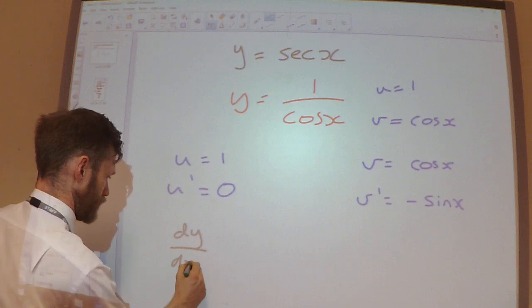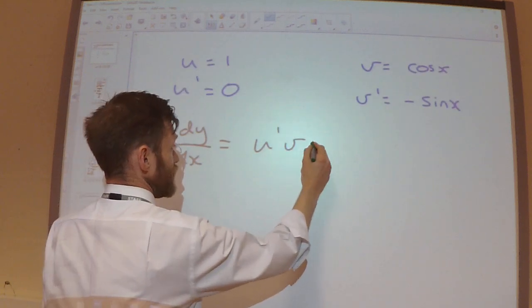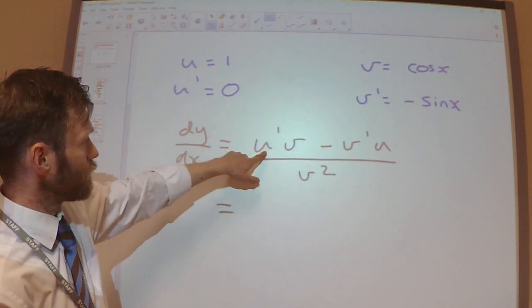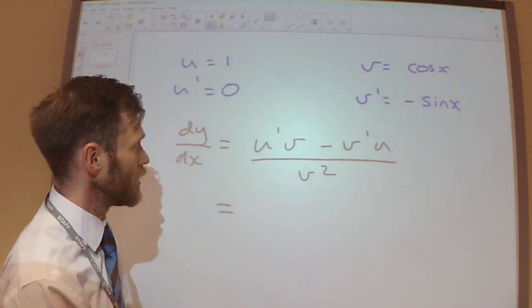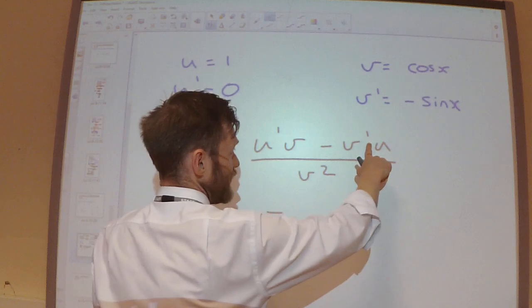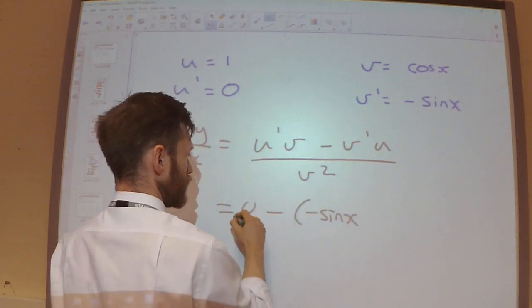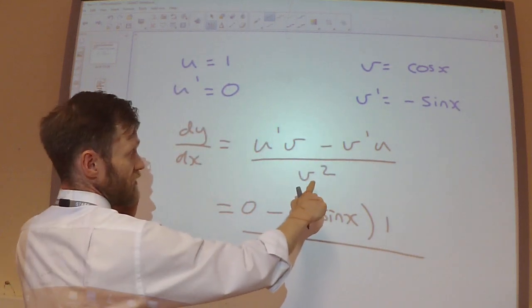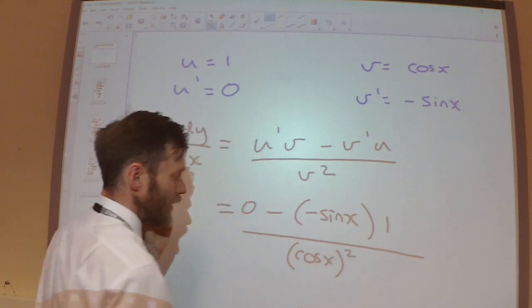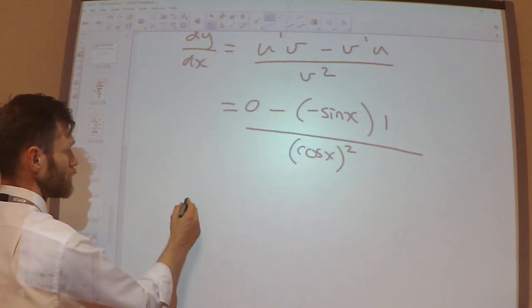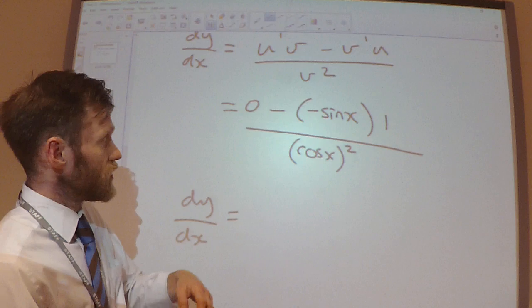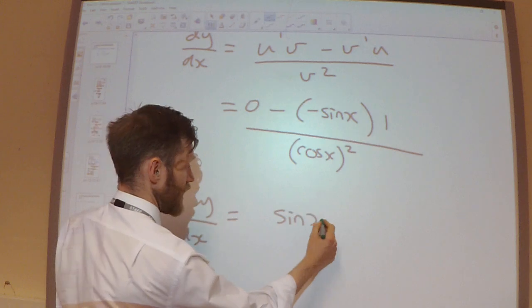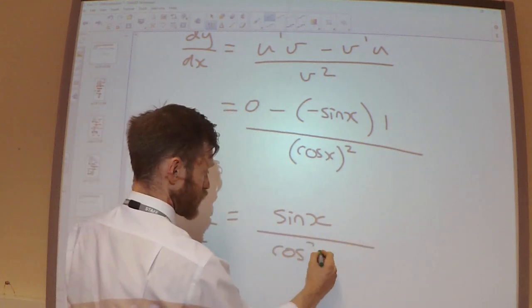So using the quotient rule, u dashed v minus v dashed u, v squared. So u dash is 0, so 0 times anything is going to be 0. Then I've got minus v dashed, which is minus sine x, multiplied by u, which is 1. That's all over v, which is cos x squared. So we've got the minus minus, so all we're left here on the top is sine x over cos squared x.